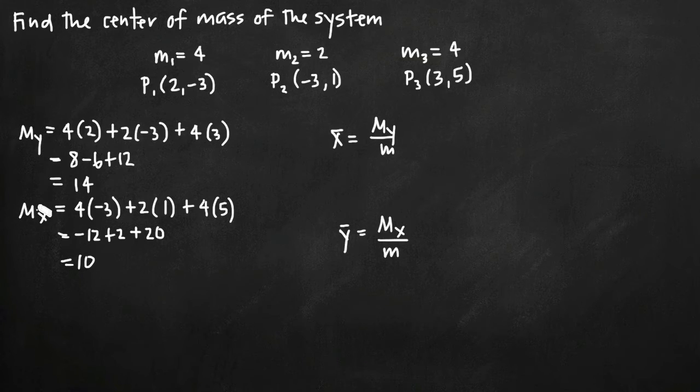And then to find m_x, we're multiplying each mass by the distance of that mass away from the x-axis, and that of course is the y value in the coordinate point. So we multiply each mass by the y value, we take the sum of the three of those, and we get the moment here of 10.